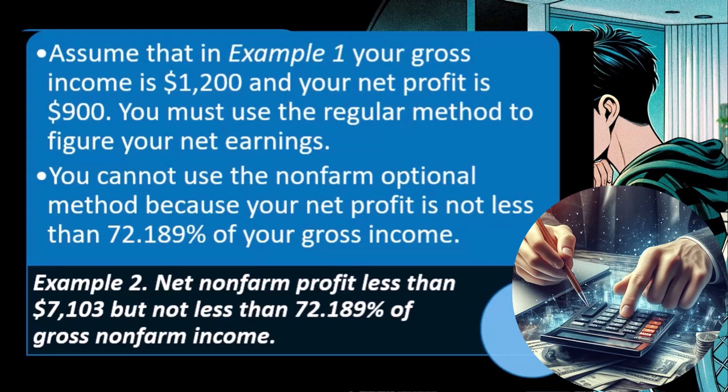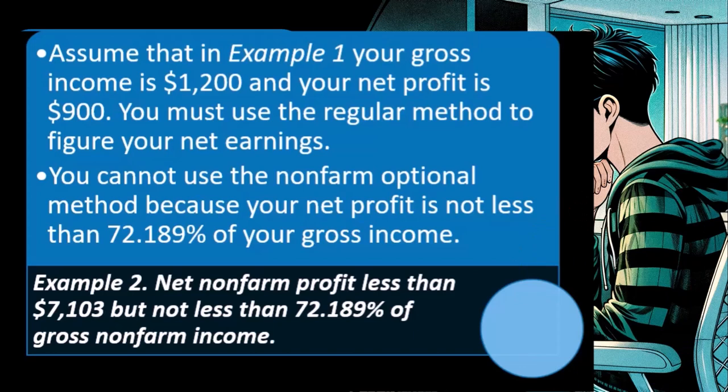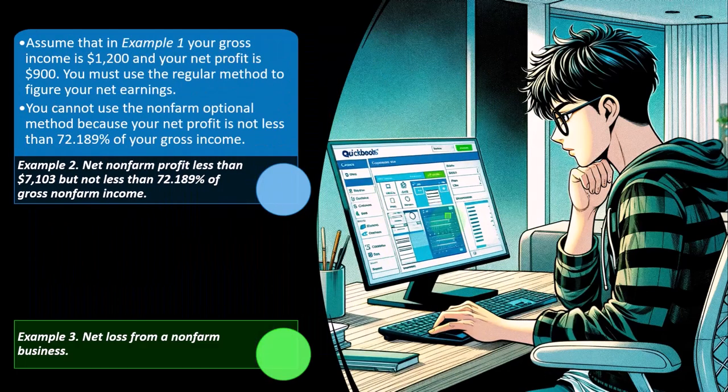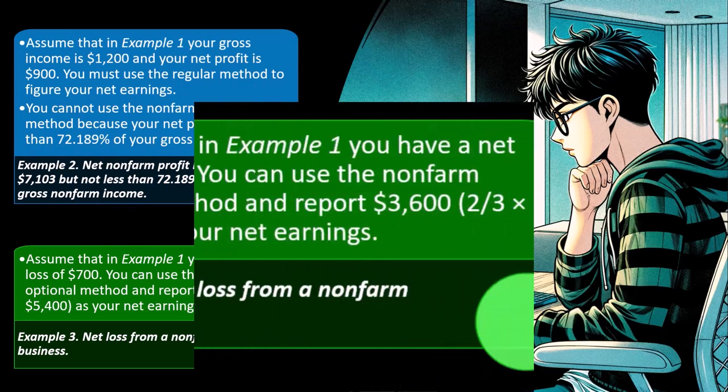Software, of course, could possibly help with these calculations. But you are going to need to know when the optional method might be beneficial, and then figure out how to help the software do the calculations and double-check that the calculations are being done properly. When would it be beneficial? Possibly, as we saw in a prior presentation, when increasing income might actually be a good thing because of the credits.